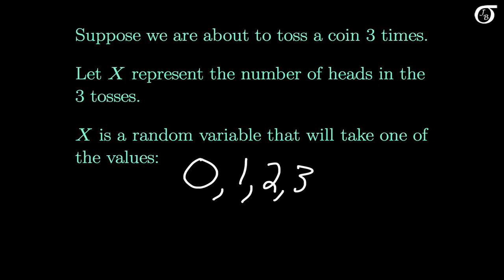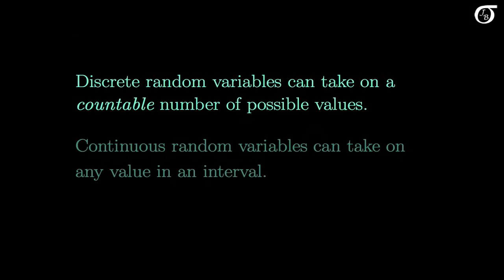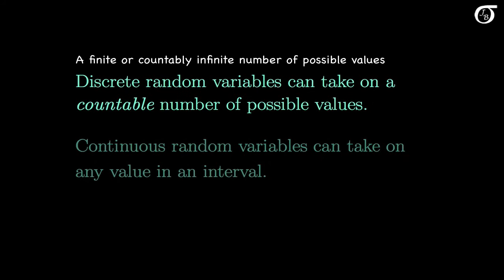There is an important distinction between discrete random variables and continuous random variables. Here x is what we call a discrete random variable. Discrete random variables can take on a countable number of possible values. This might be a finite number of possible values, as it was in the coin toss example where there were four possible values, or it might be a countably infinite number of possible values. We'll look at more examples in a moment.